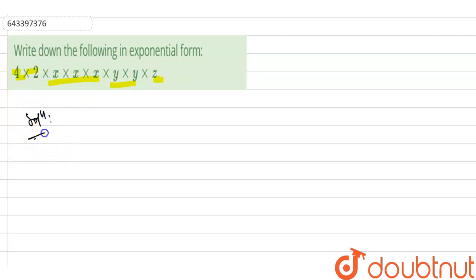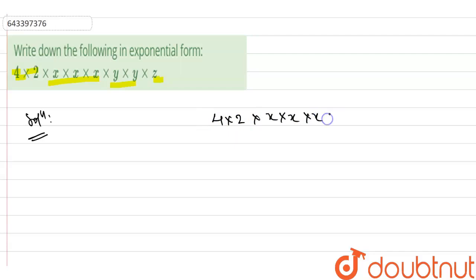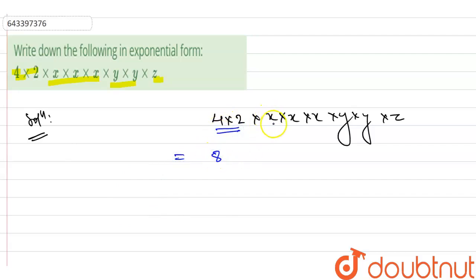Now let's solve this question. We have 4 into 2 into x into x into x into y into y into z. We have to write it in exponential form. First of all, 4 into 2 gives us 8. And as we can see, x into x into x means x has been multiplied 3 times, so we write it as x to the power 3.